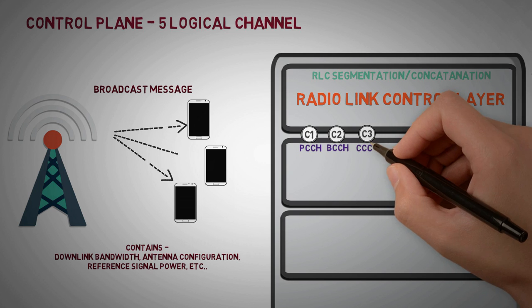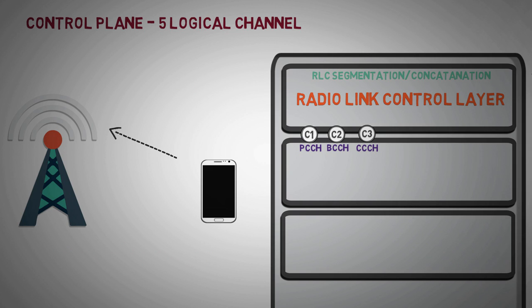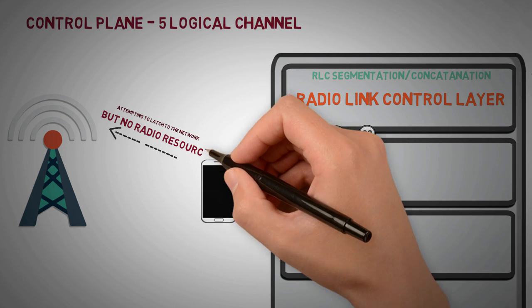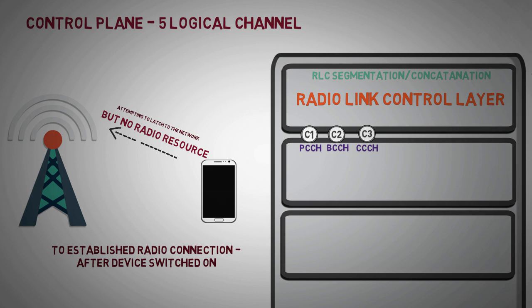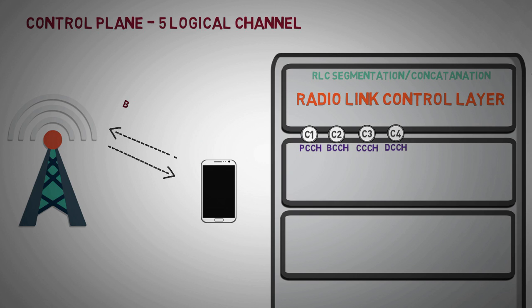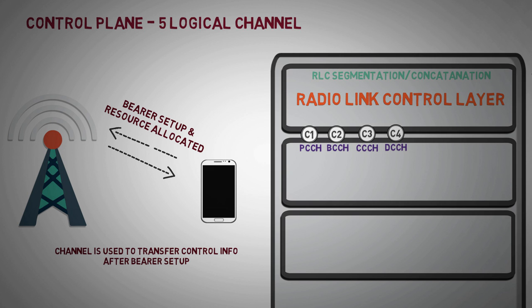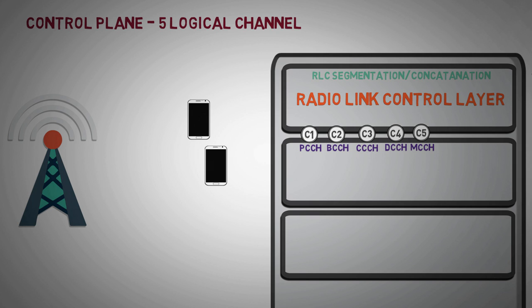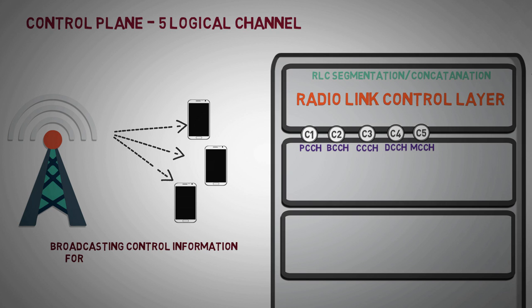Common control channel: when device switched on and device is attempting to latch to the network, it doesn't have any radio connection established. So the device uses this channel for exchanging control information. Dedicated control channel: once dedicated radio bearer resource has been set up at both device and E node B end, dedicated control channel is used to transfer control info. Multicast control channel: this channel is used to carry control informations of a group of users in a cell for multicast broadcast services.